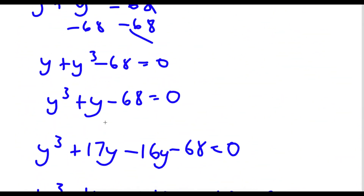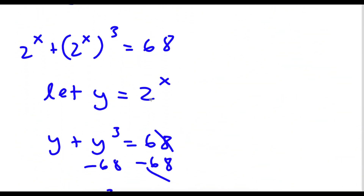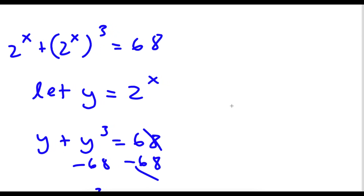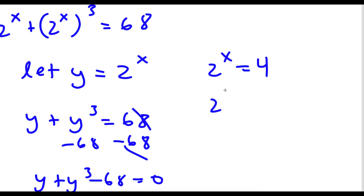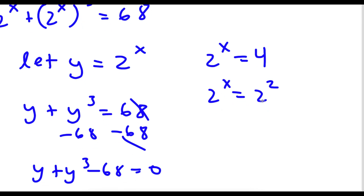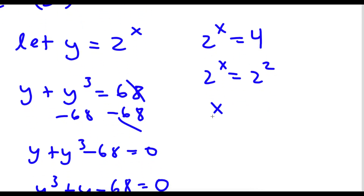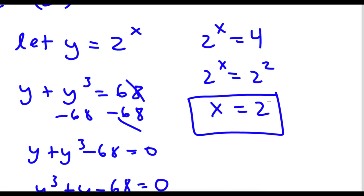So if y is equal to 4, and remember y equals 2 to the power of x, I now have 2 to the power of x equals 4. And 4 is the same as 2 squared, so 2 to the power of x equals 2 squared, which means x equals 2. So x equals 2 is our solution.